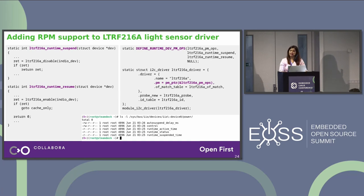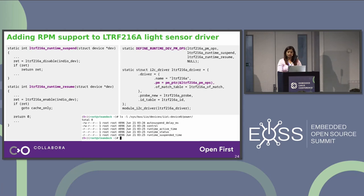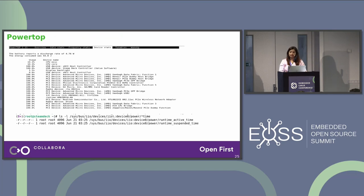Once you've added all this support, a power directory is created for your device with attributes including auto_suspend_delay, control, runtime_active_time, and runtime_suspended_time. The latter two are used by PowerTop to show usage details in the device stat for each device — very useful if you have multiple devices with runtime PM.